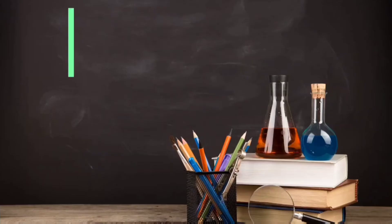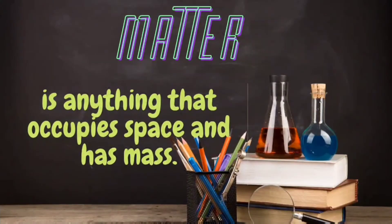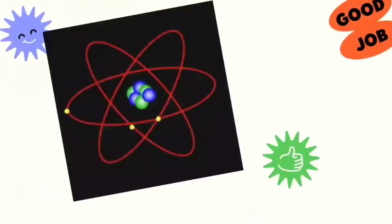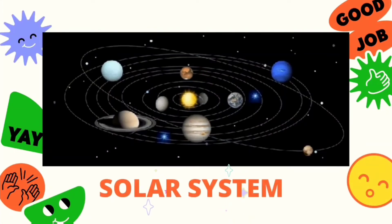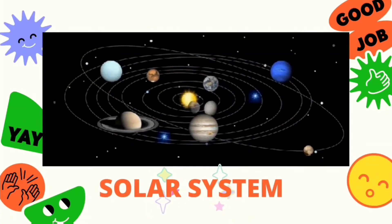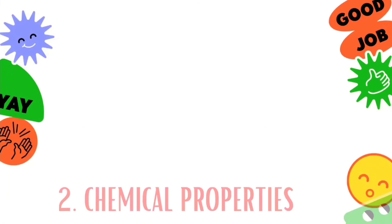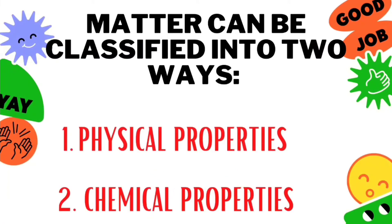In your past grade level, you have learned about matter. Matter is anything that occupies space and has mass. This means that everything around us is matter, regardless of shape and size. Matter can be classified into two ways, based on physical and chemical properties.